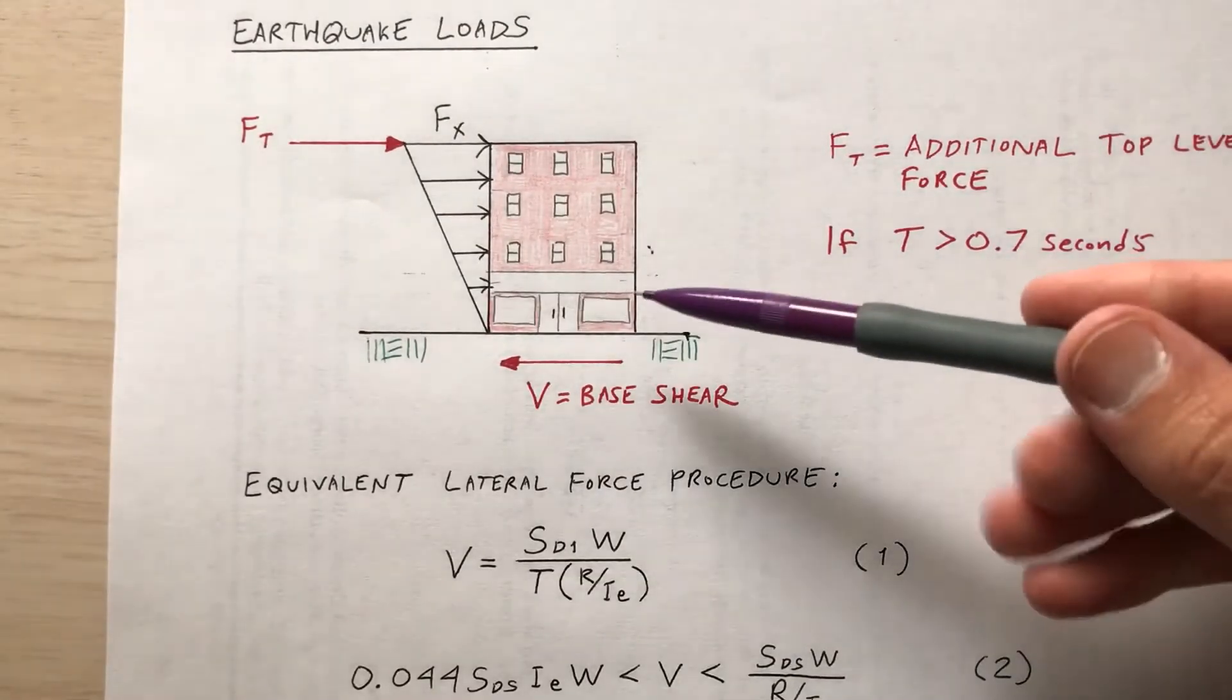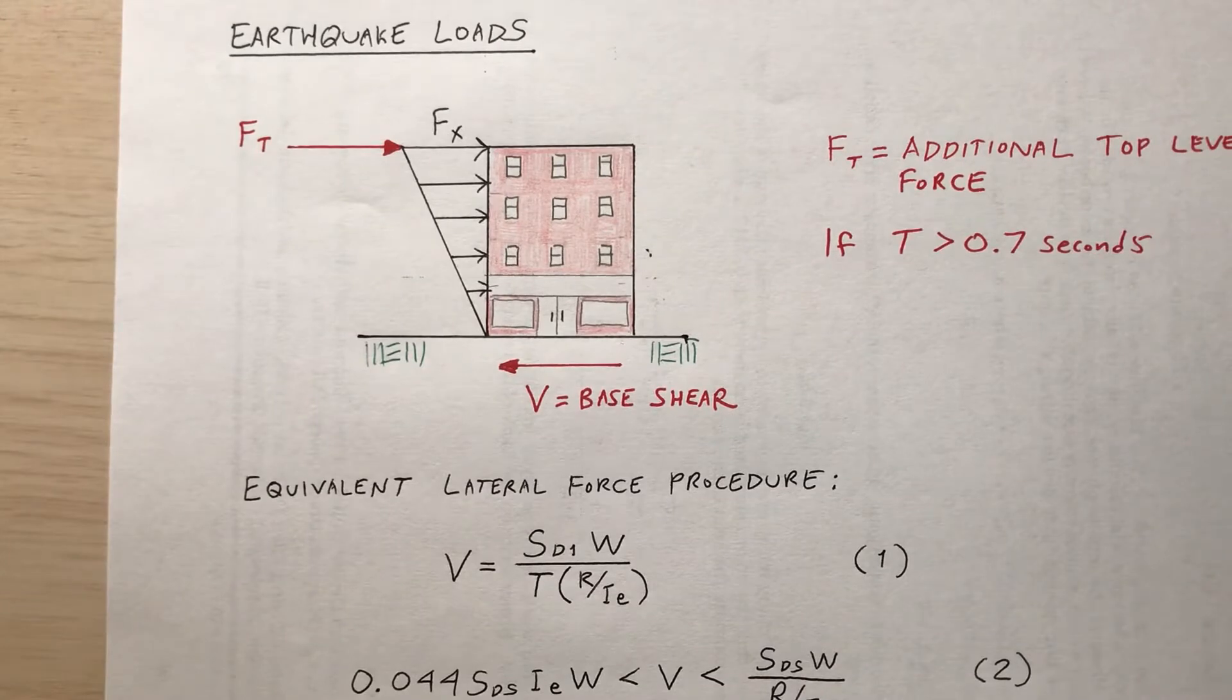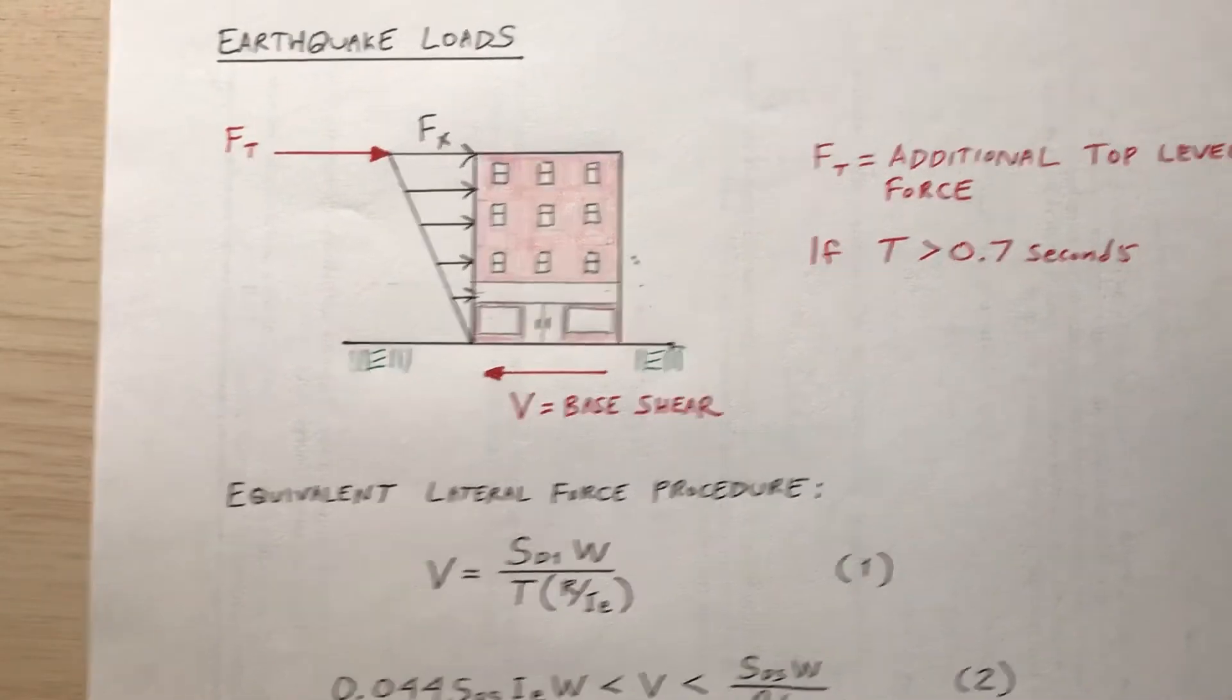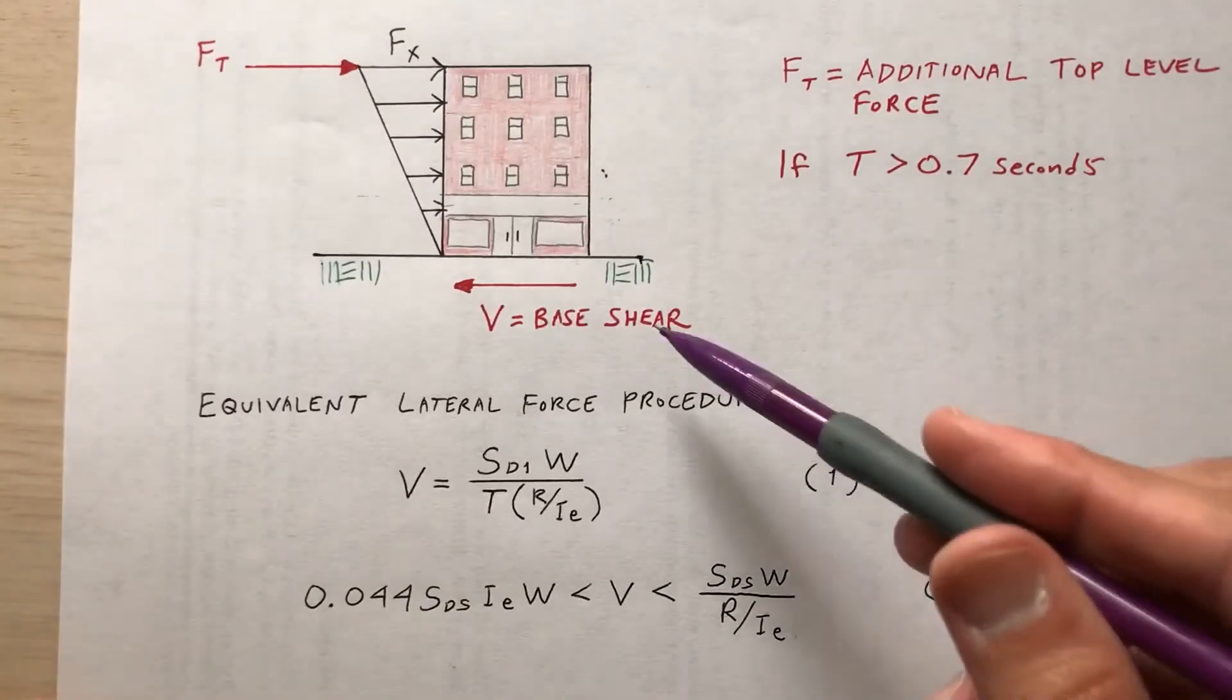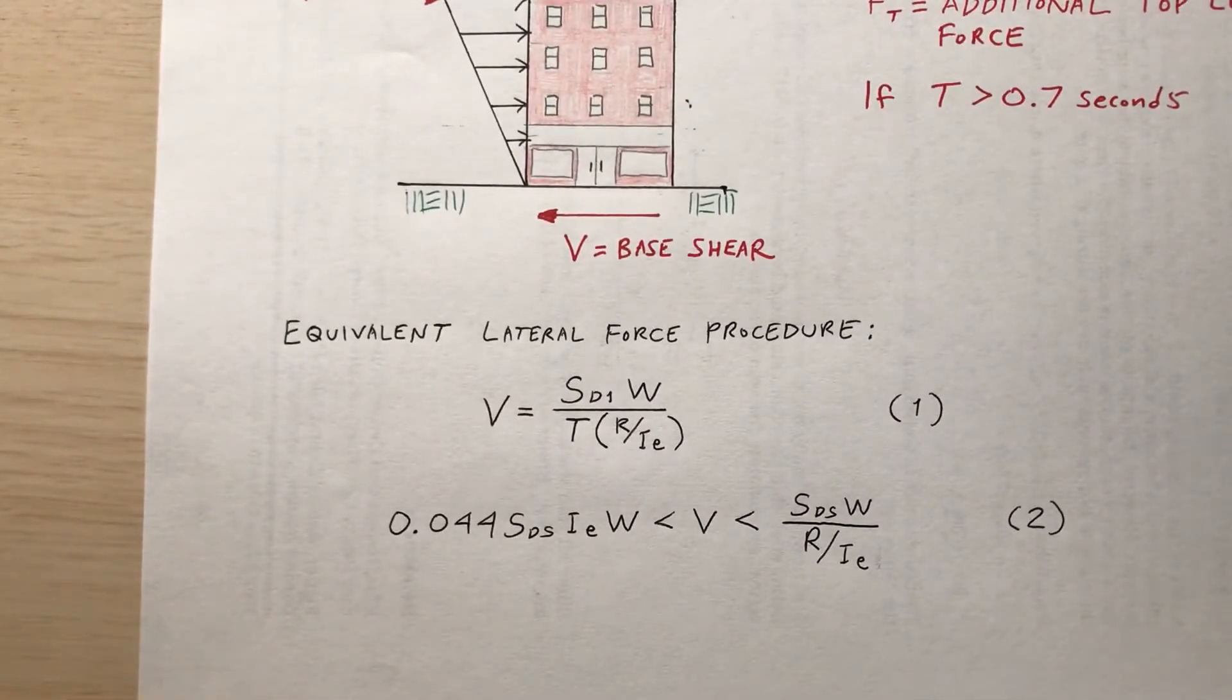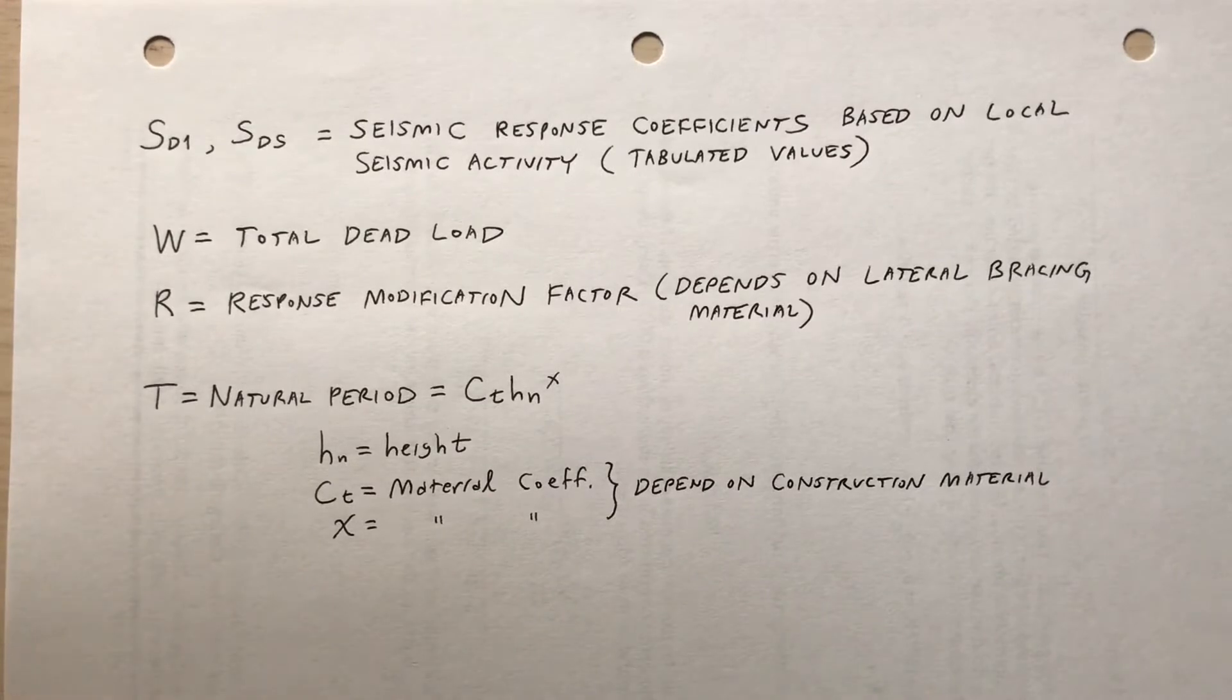Consider this building, not too tall. I've got a distributed load here that would model an earthquake, and in addition to the F_X, which is the earthquake load, I've got an F_T at the top. We call the F_T an additional top level force, which some books include if the period is greater than 0.7 seconds. And then at the bottom, V is base shear. I will follow the equivalent lateral force procedure given by base shear V equals S_D1 W divided by T times R divided by I_E. So I call that equation one, and then the base shear that I calculate has to be between these two values.